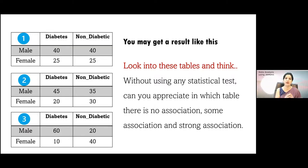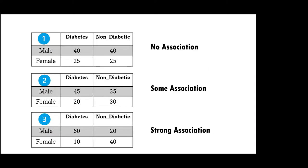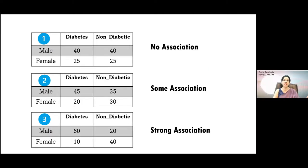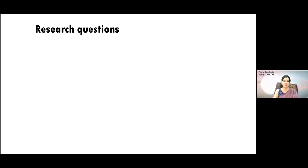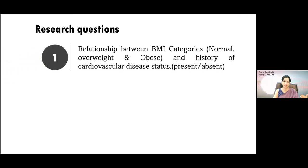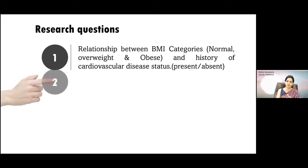The third one is a sure shot association, and the first is also a sure shot that there won't be any association. Only the middle one has a little ambiguity. So you can write that in the first case there is no association, in the second case there can be some association, and in the third case there is a strong association. The research question we generally frame for chi-square test of association is to test whether there is a relationship between BMI categories and history of cardiovascular disease.